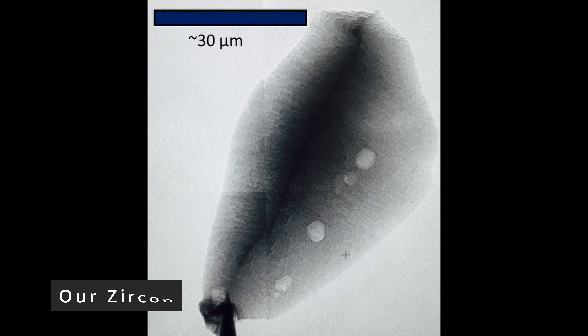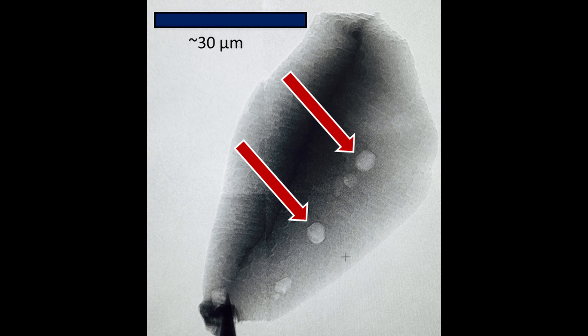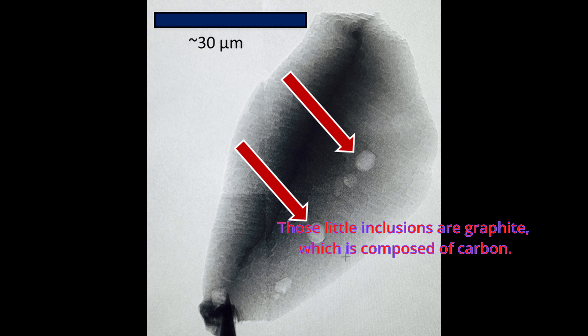So we have a zircon, but what can we do with it? What this means is that we have locked inside this zircon material that comes from a time period from which we have no rocks, and older than any other known fossil. And specifically, if we can find inside one of these zircons carbon, we can then ask whether that carbon came from a living source. But just having carbon isn't enough, of course.